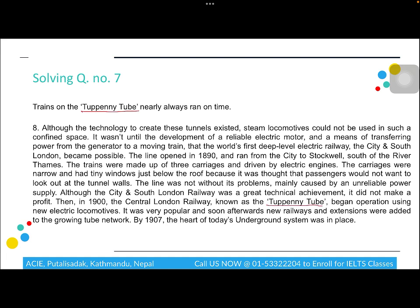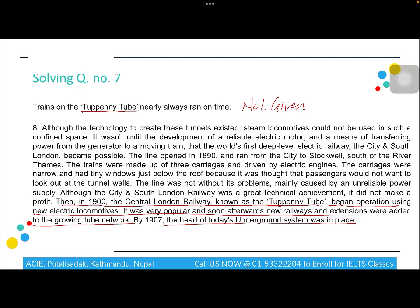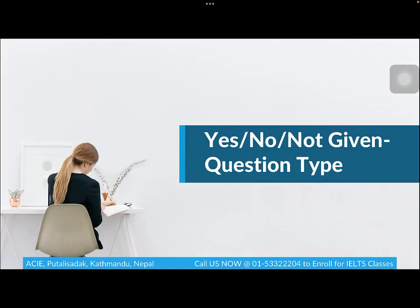For question seven, 'Twopenny Tube' is the keyword. The passage mentions in 1990 the Central London Railway, known as the Twopenny Tube, began operation using new electric engines and was very popular. However, even reading in detail, there is no information about whether it ran on time or not — so the answer is Not Given. That is how you solve a True/False/Not Given question: focus on keywords, watch for rephrasing, and decide accordingly.